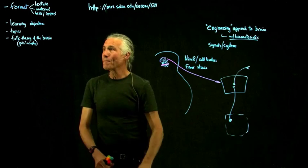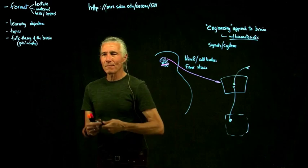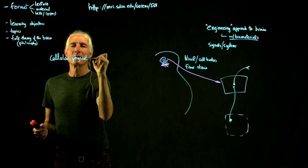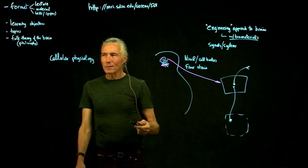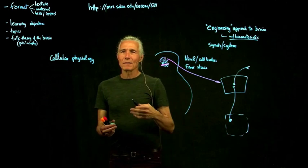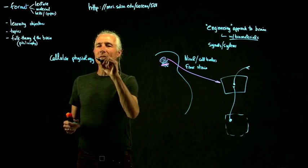Class topics: we start off with cellular physiology — that'll be Friday. We'll talk about the resting potential, action potential, dendritic potentials, synaptic potentials, LTP, STDP — how does synaptic weight change actually occur — and basic neurotransmitters. There's a whole bunch of topics there, and you can see them in the syllabus.